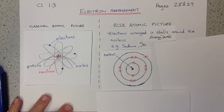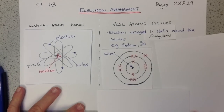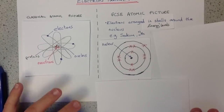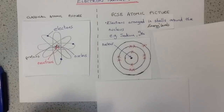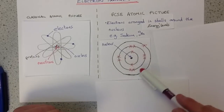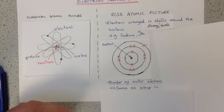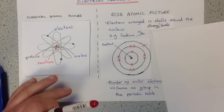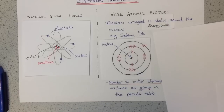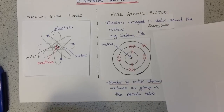One thing to note at this stage is the number of outer electrons — so the very outer ring, 1 for sodium — is the same as the group number in the periodic table for that element. So, if you look up sodium in your periodic table, you'll find it there in group 1.